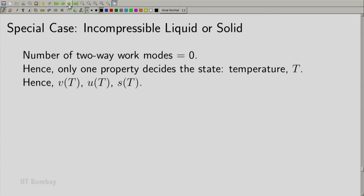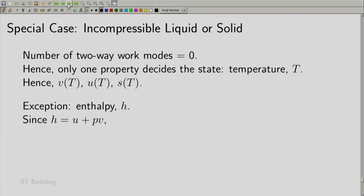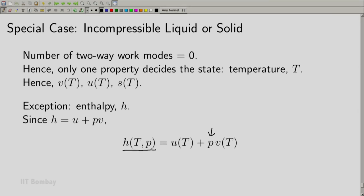For an incompressible substance, any property other than temperature must be a function only of temperature. So specific volume, specific thermal energy U, and specific entropy are all functions of temperature only. However, enthalpy is a special case and an exception, because of its definition: H = U + PV. Since U is a function only of temperature and V is a function only of temperature, those components don't change with pressure — but pressure appears directly, so enthalpy is a function of both temperature and pressure, even for an incompressible liquid or solid.